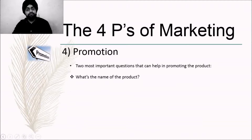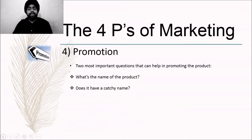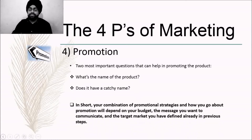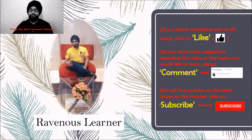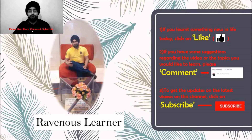Today we learned about the four Ps of marketing — Product, Price, Place, and Promotion. In short, the combination of your promotion strategies and how you go about your promotions will depend on your budget, the message you want to communicate, and the target market which you have already defined in the previous steps. Thank you for giving your valuable time in watching this video. I am always of the opinion that learning is a continuous process and we should learn as if there is no tomorrow. If you have learned something new today, please give a like. If you have suggestions regarding future videos or this video, please comment below. For notifications of my future videos, please subscribe to my channel, Revenious Learner. Thank you.